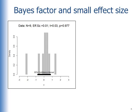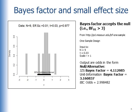Here's a new example. It has a small data set of just nine values. There's a very small effect size and a very wide confidence interval. What does a Bayes factor say about this? It accepts the null.